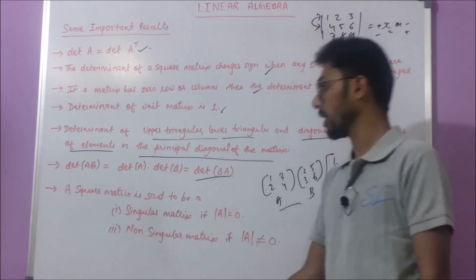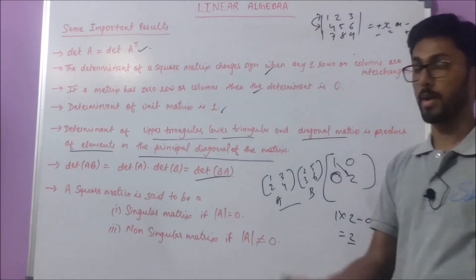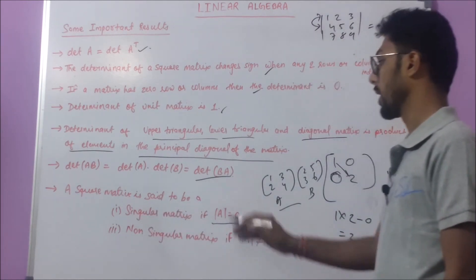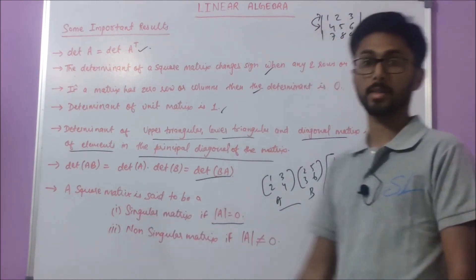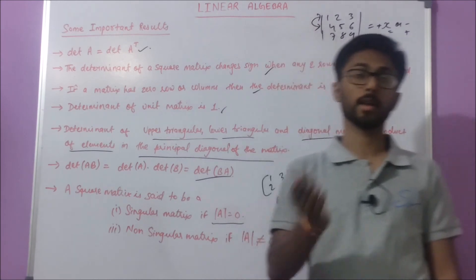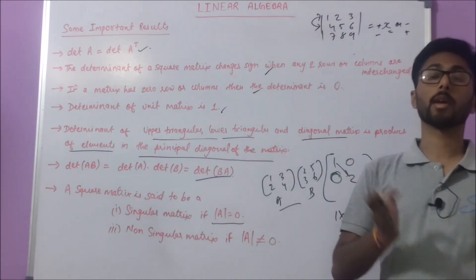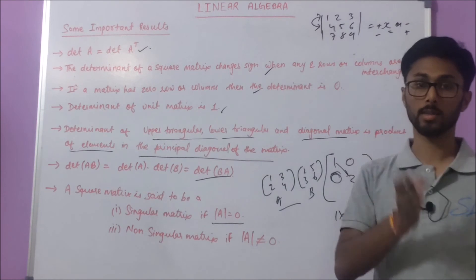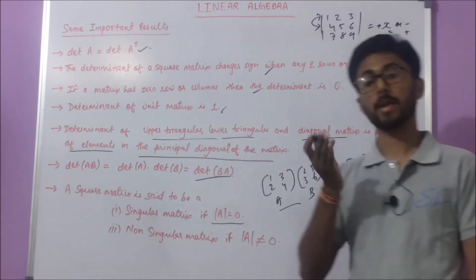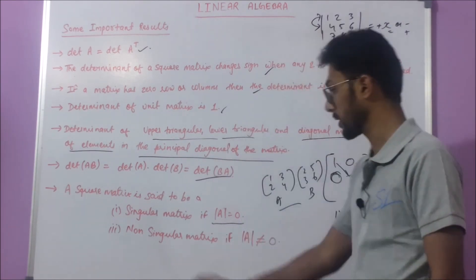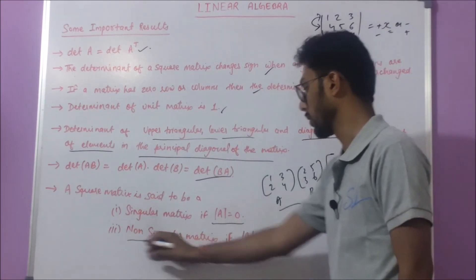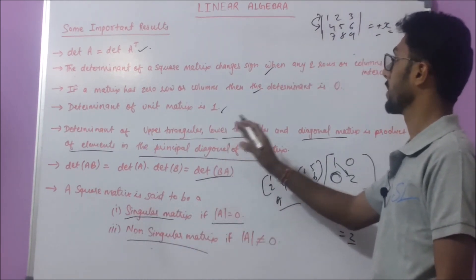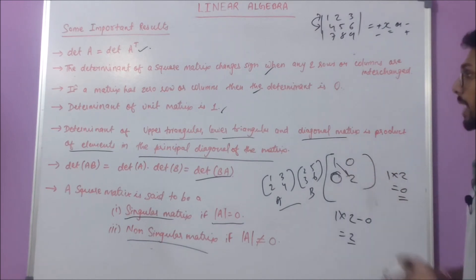A special type of matrix uses the concept of the determinant. A square matrix is said to be singular if its determinant equals zero. If the determinant is not equal to zero, then the matrix is called a non-singular matrix.